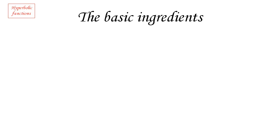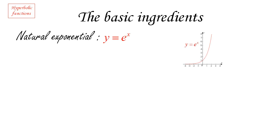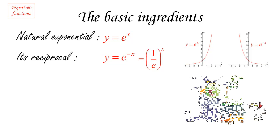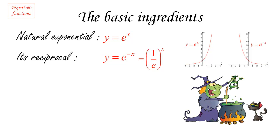To construct the hyperbolic functions, we need very simple ingredients and a very simple recipe. The ingredients are, first of all, the usual natural exponential function y equals e to the x, the graph you see here. And we also need its reciprocal, which is y equals e to the minus x, which we can also write as one over e all to the power x — telling us it is also an exponential function — or as one over e to the x, which is why I called it the reciprocal.